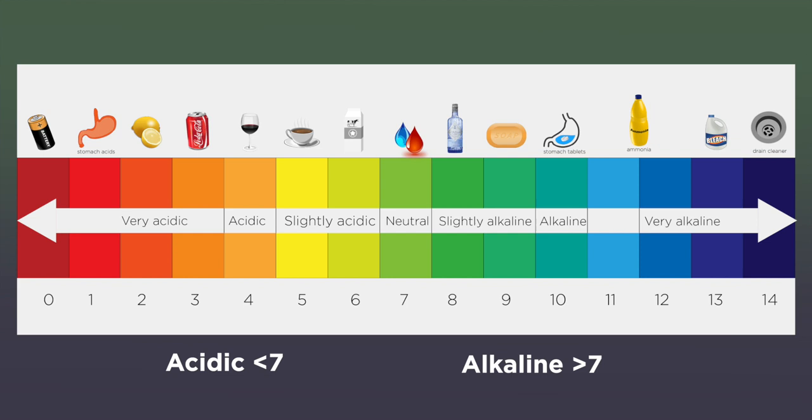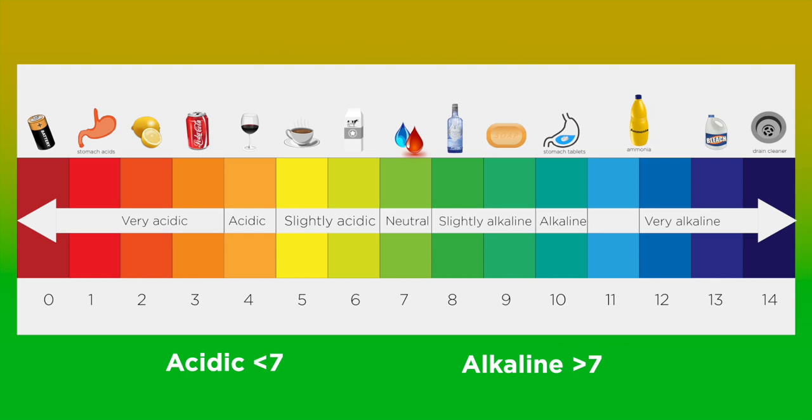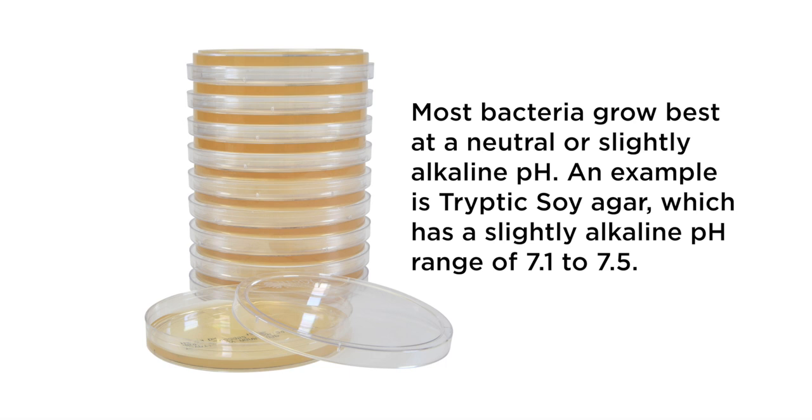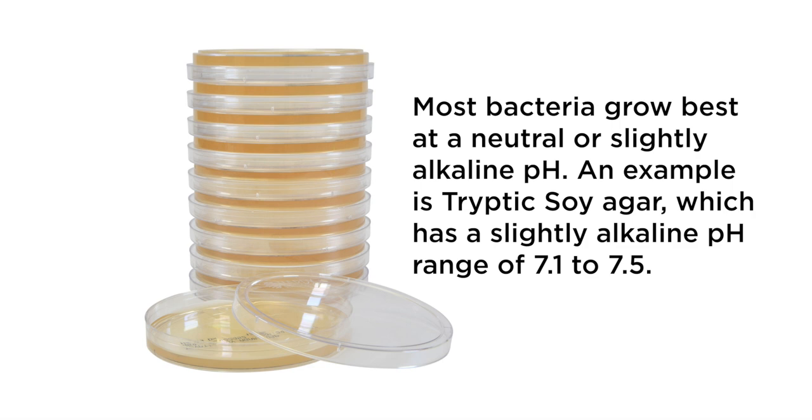The pH of culture media is very important because some microorganisms prefer to grow in a slightly acidic or alkaline environment. Most bacteria grow best at a neutral or slightly alkaline pH. An example is tryptic soy agar, which has a slightly alkaline pH range of 7.1 to 7.5.